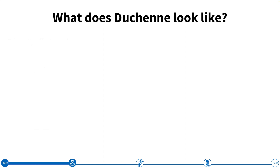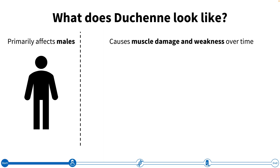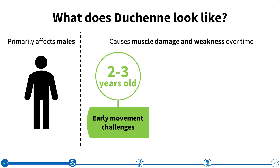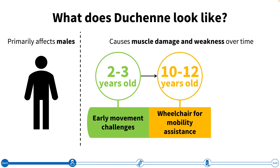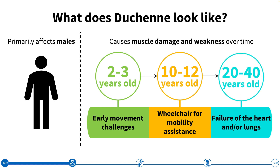Duchenne primarily affects individuals who are assigned male at birth, and it is a disease that causes muscle damage and weakness to develop over time. The earliest symptoms typically include challenges with movement, like having a hard time climbing the stairs or experiencing frequent falls, which first occurs at between two and three years old. By the time children with Duchenne reach between 10 and 12 years old, their muscles become very weak, and they often require a wheelchair. Individuals with Duchenne typically live to the age of between 20 and 40 years old, at which point they experience failure of the heart or the lungs.